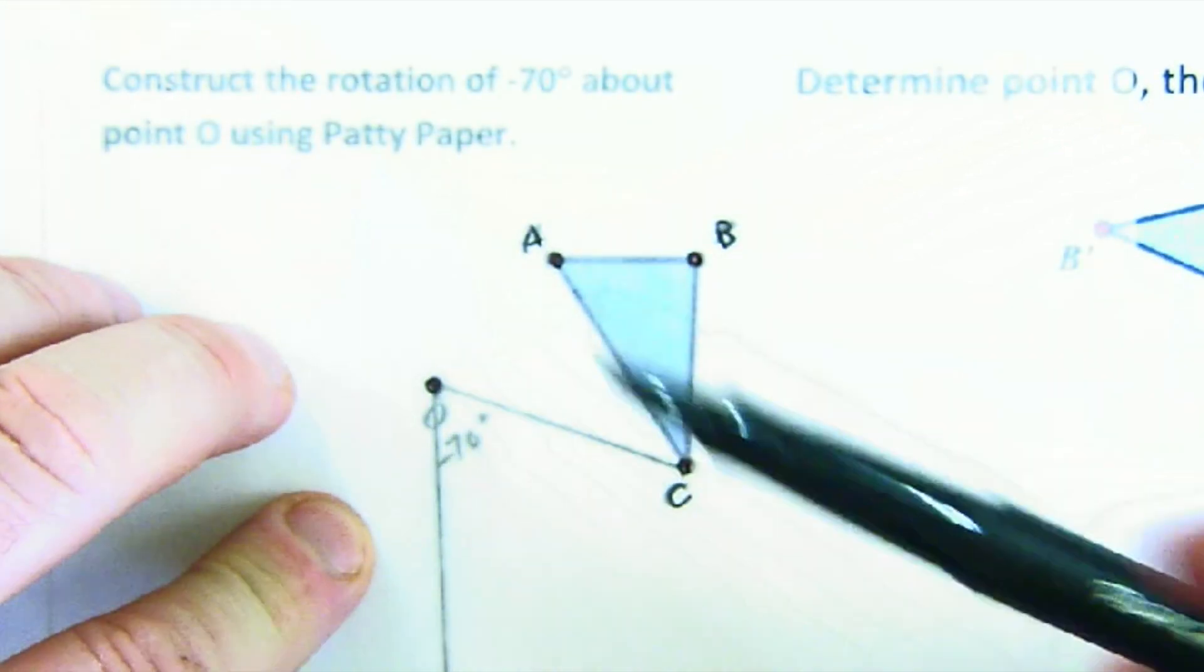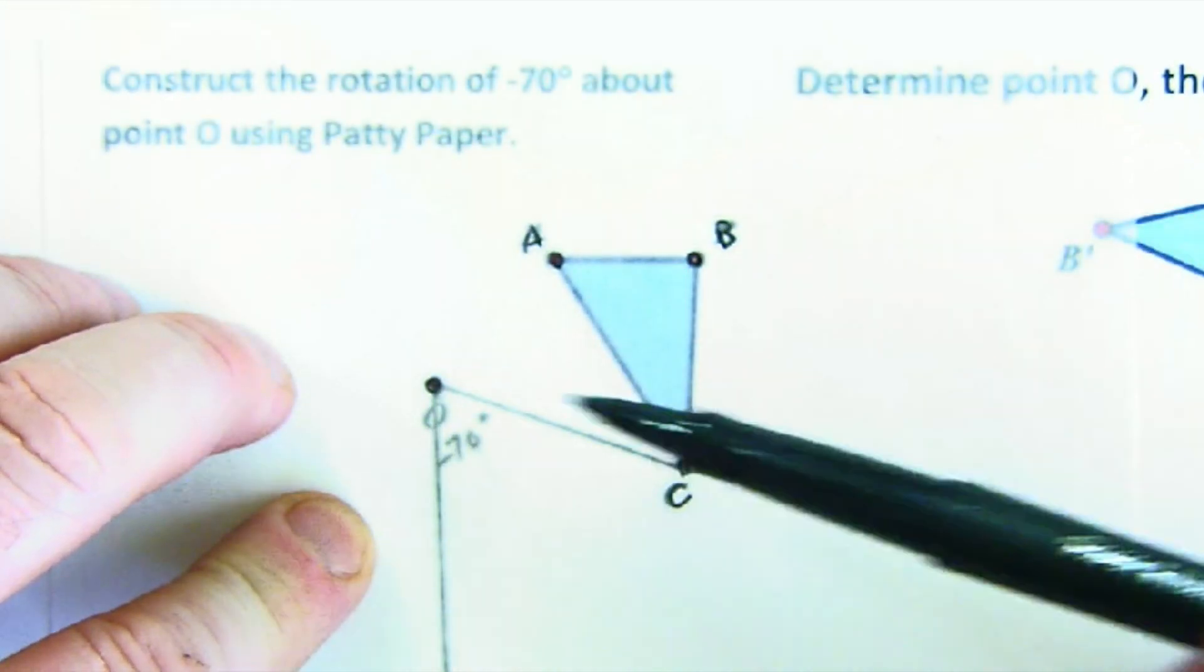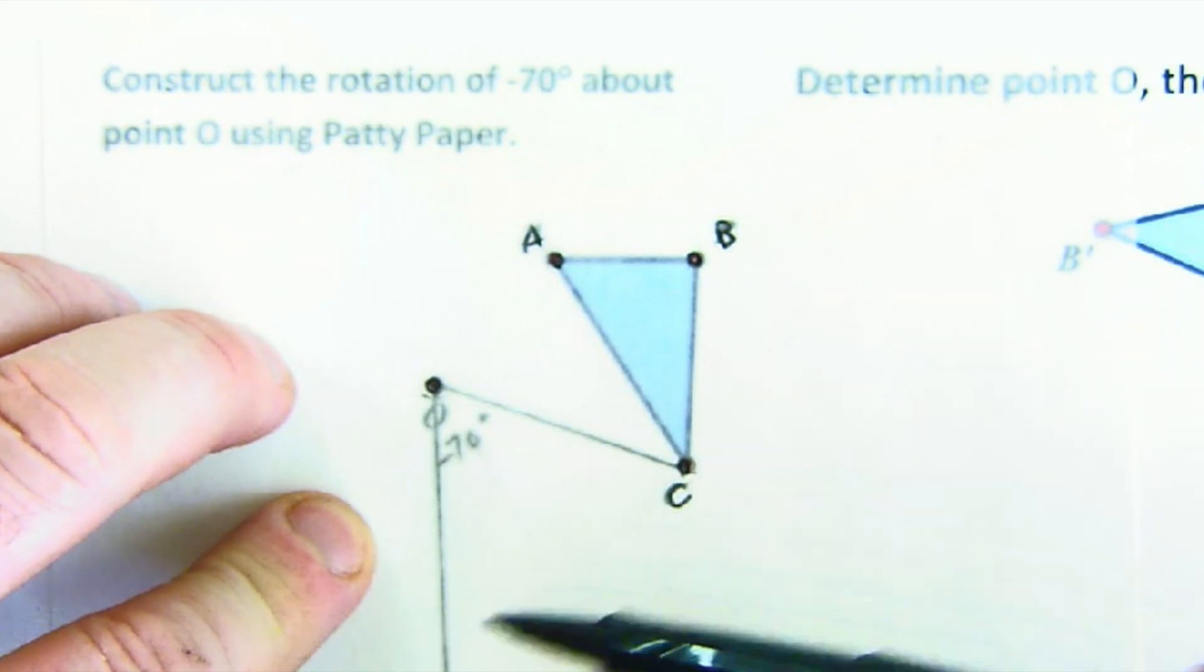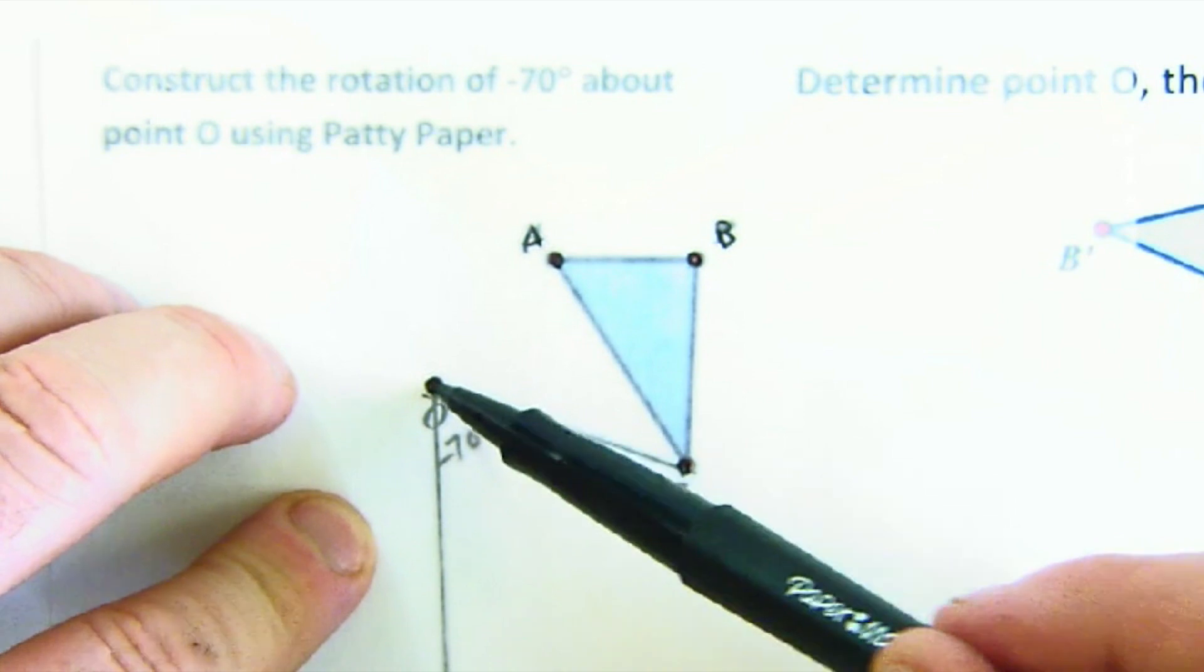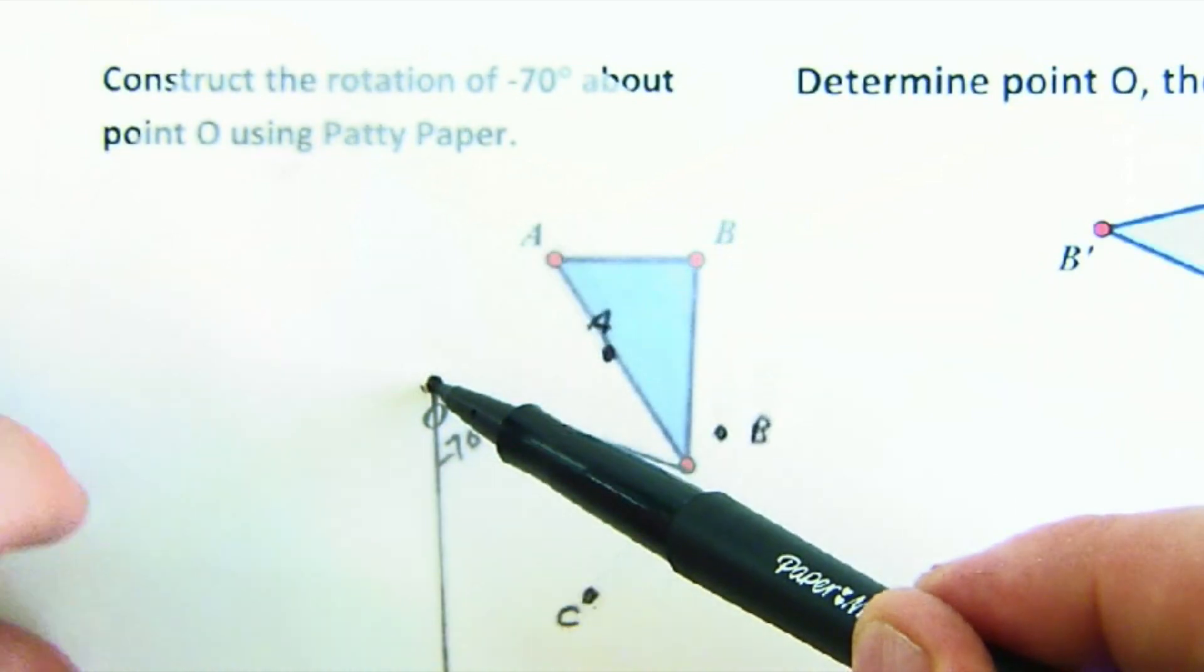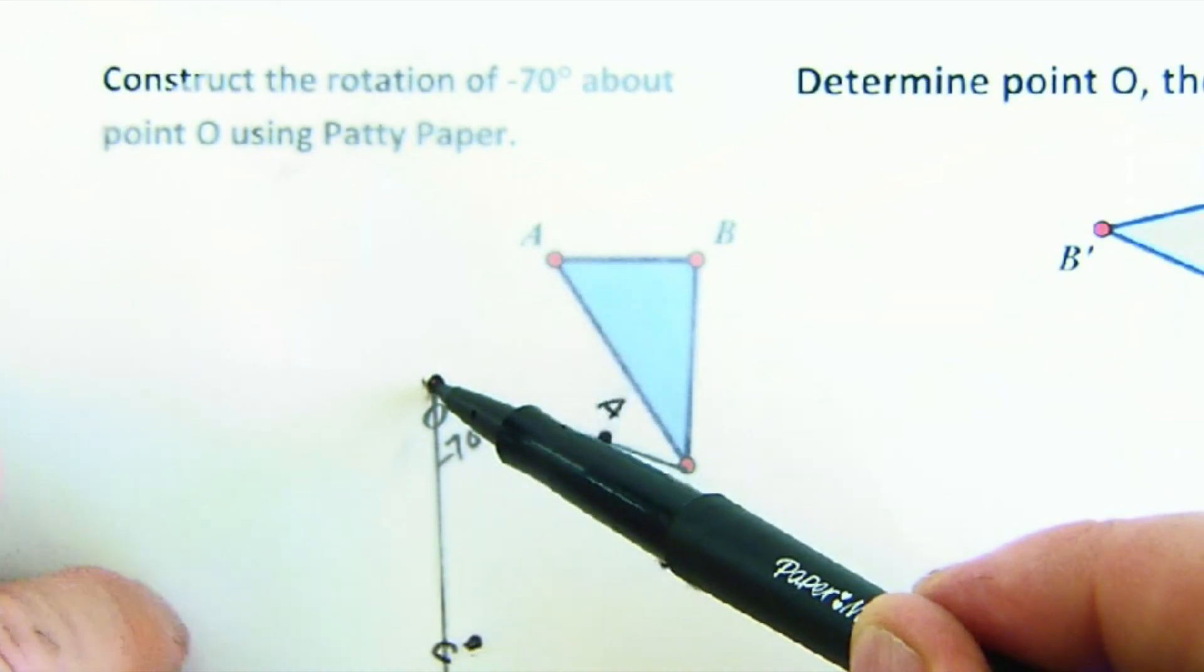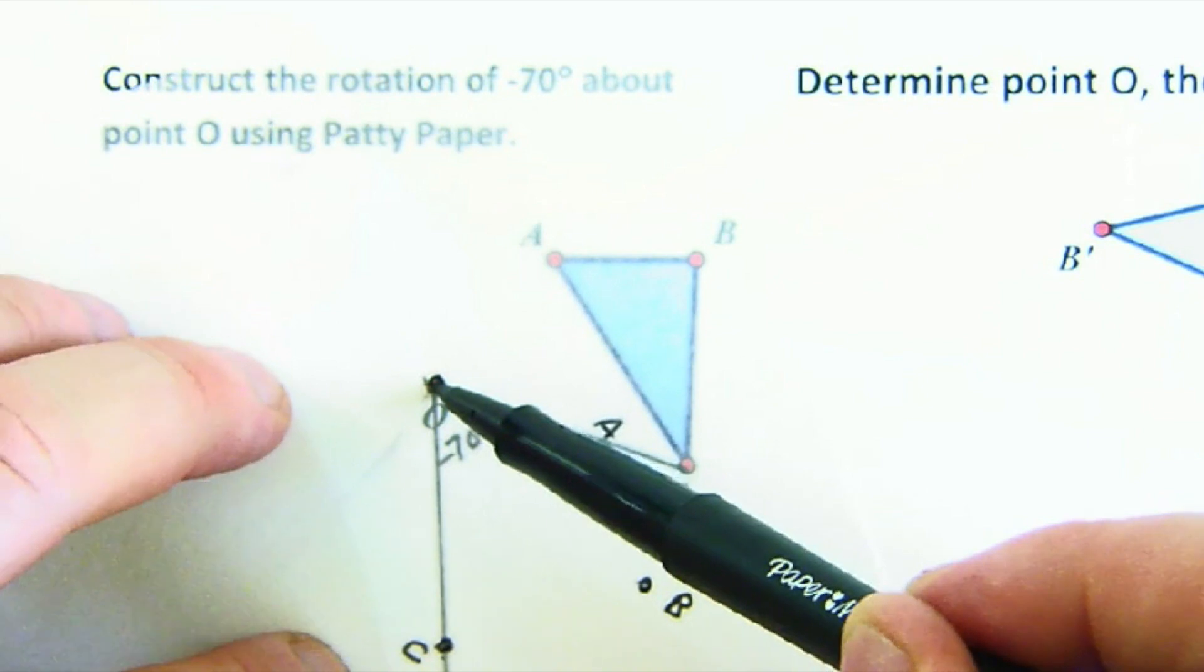Now I am going to follow C, because the angle that I made is from C. So C prime will be the 70 degrees over here. So again, I'm going to pin this and rotate until I land on that 70 degrees right there.